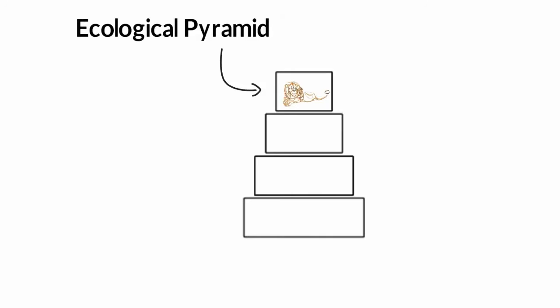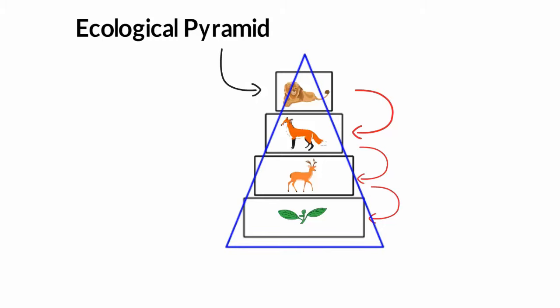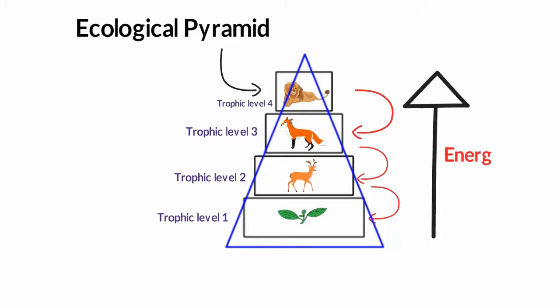It is basically a graphical representation that tells us the feeding patterns of organisms in different ecosystems. By the name you can figure out that this graphical representation has to be in the shape of a pyramid. Each bar of the pyramid represents a different trophic level, which is based on who eats whom and how the energy flows or transfers from one organism to another.